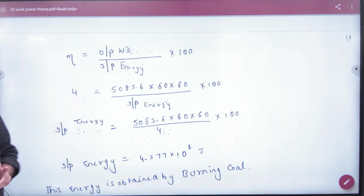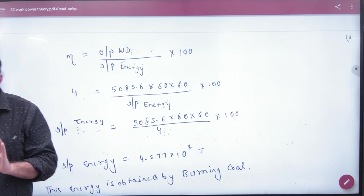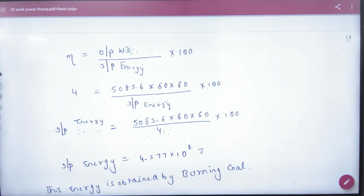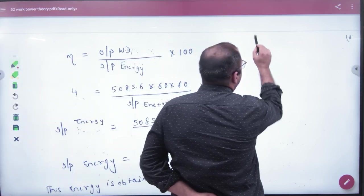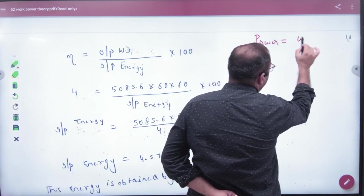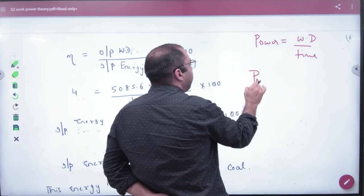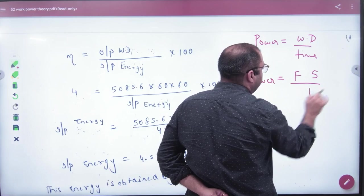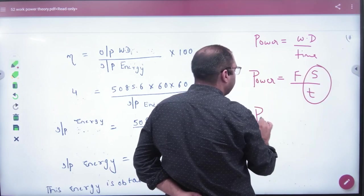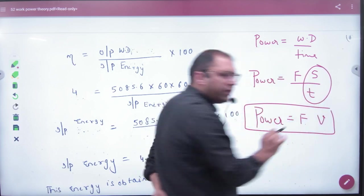To find output work done in one hour, we need to understand that power equals work done divided by time, which equals force times displacement divided by time. Since displacement by time is velocity, power can be written as force times velocity.